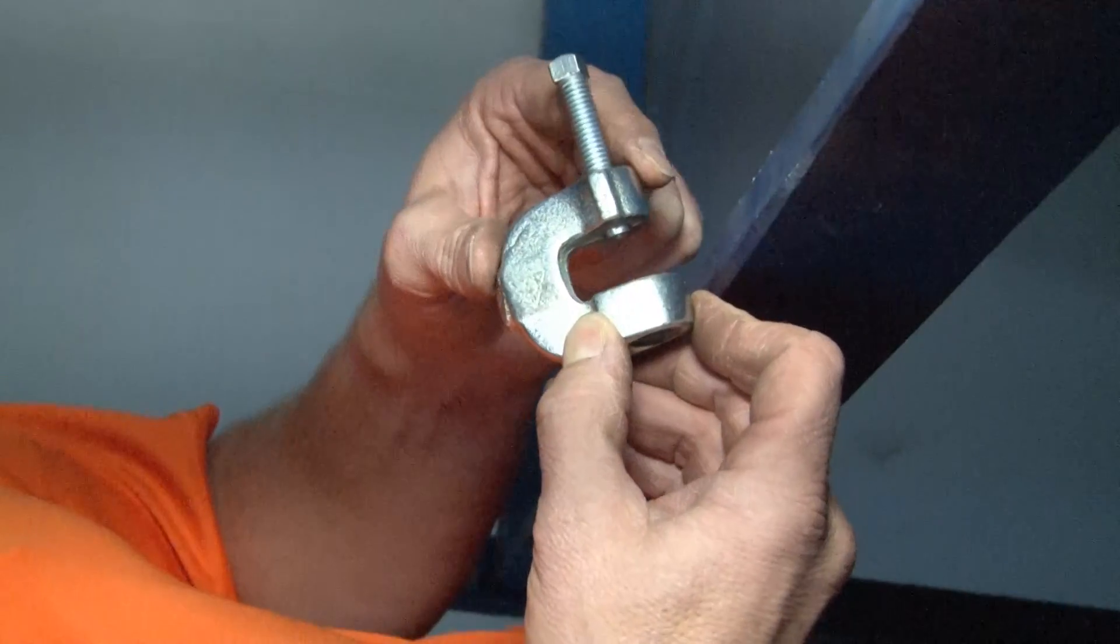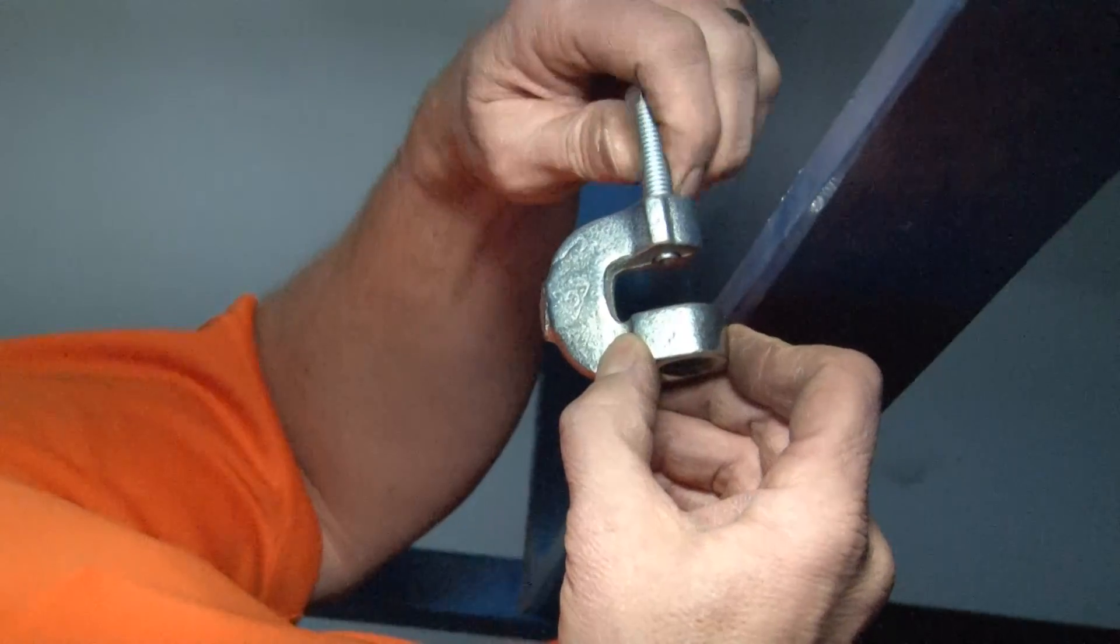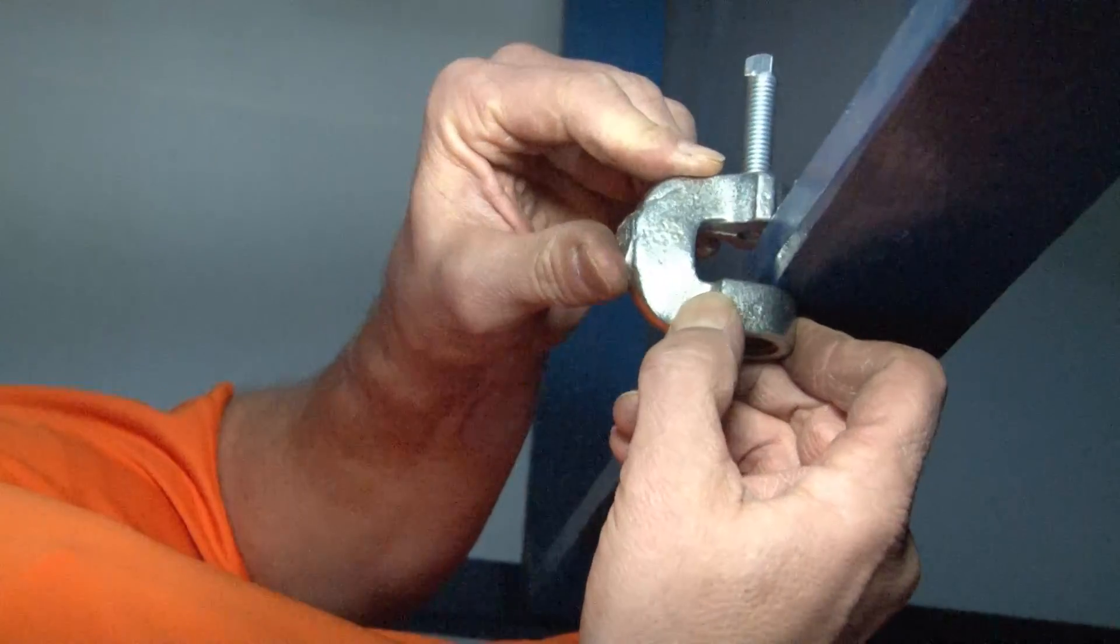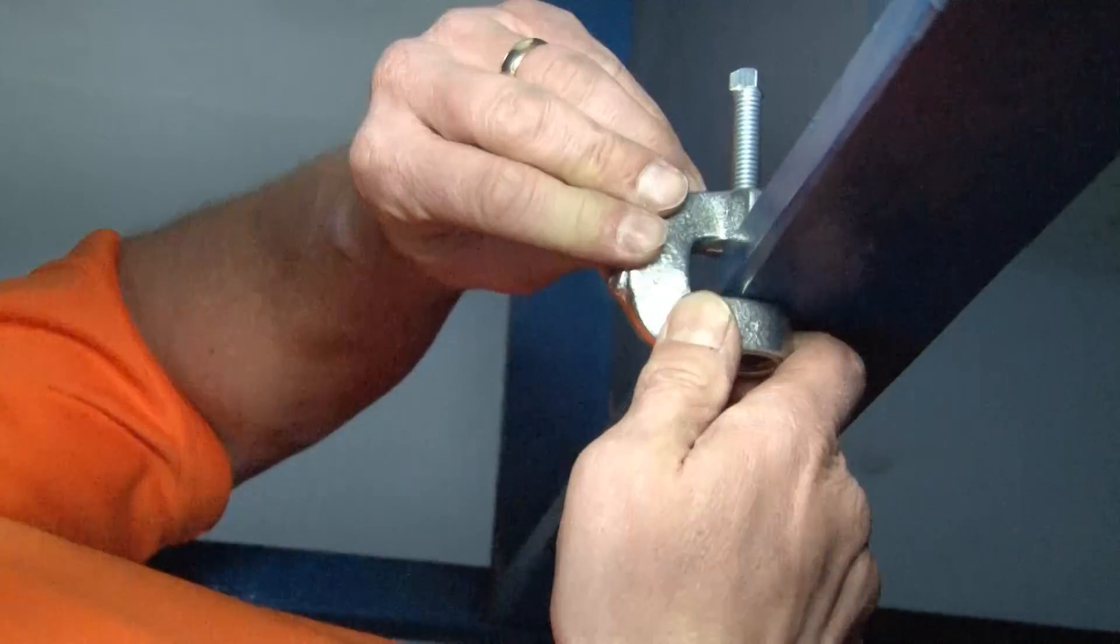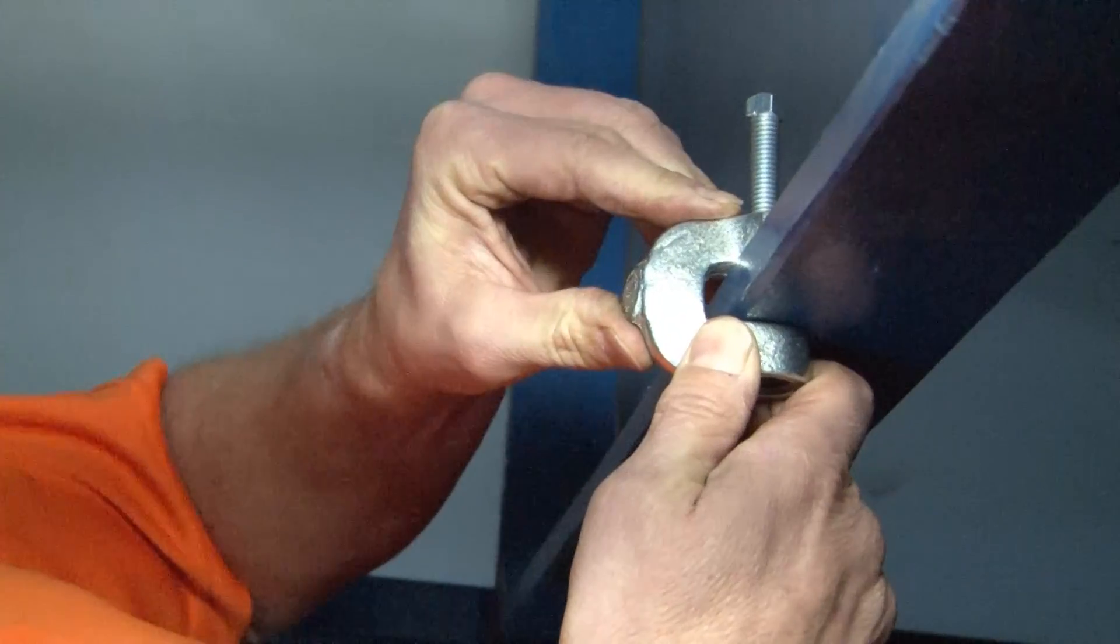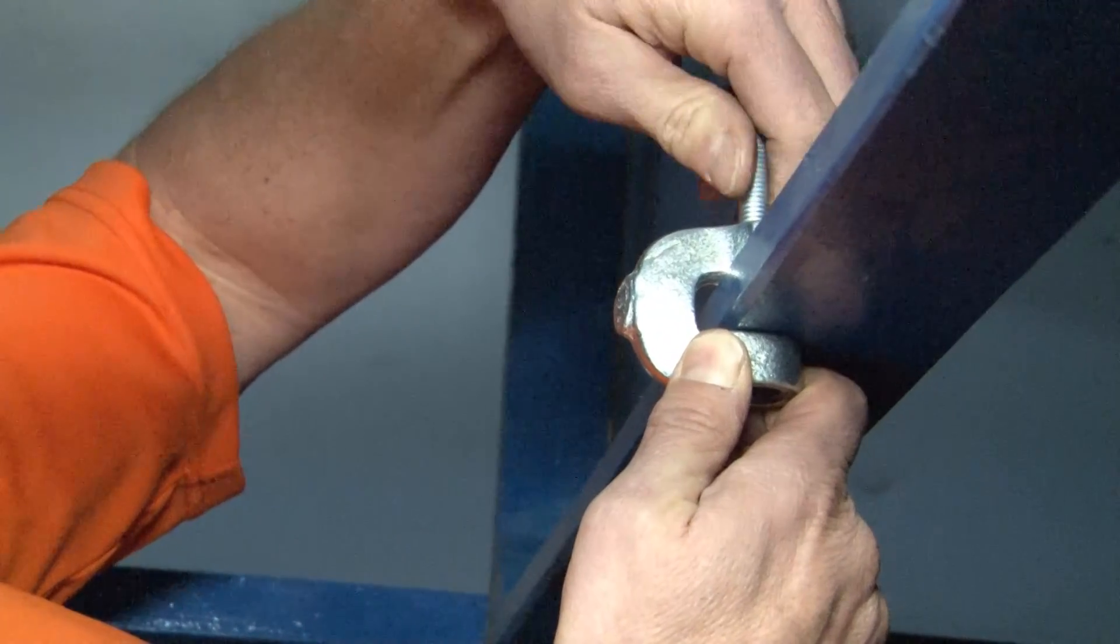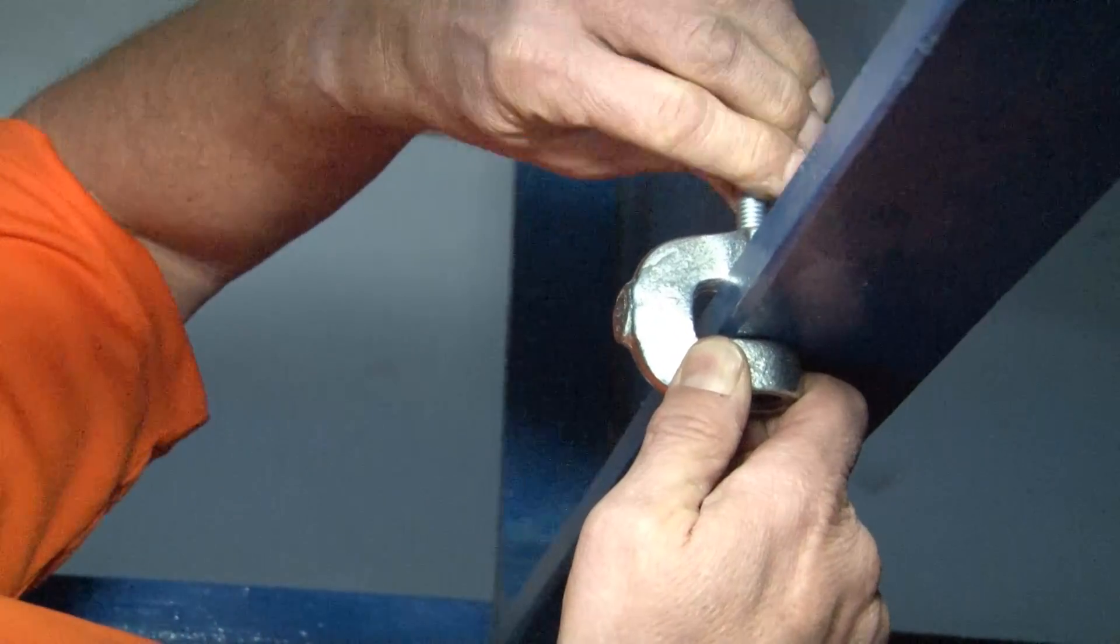You align the jaw of the clamp with the edge of the beam and then slide it into place like so. Once it's secure on the beam where you want it to be, simply tighten the set screw against the beam with a pair of channel locks.